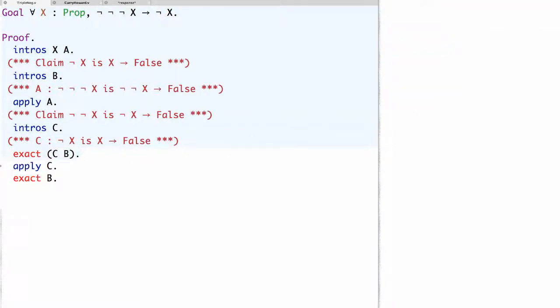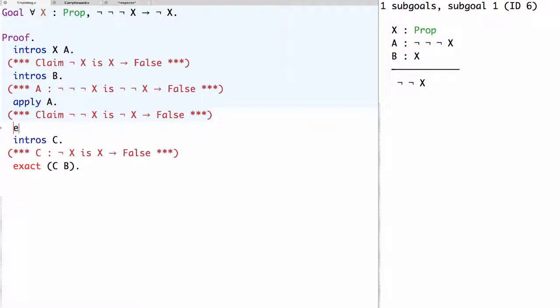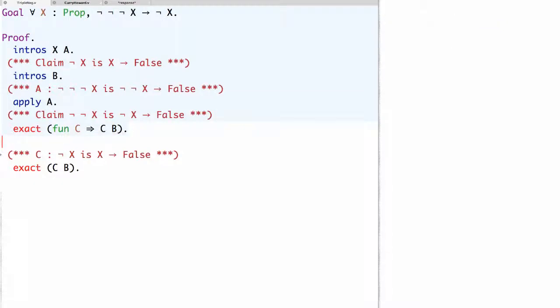Now we also know that each of these intros corresponds to a lambda abstraction in the proof term. So we can go before this intro c. So before we introduced the assumption c of not x. And we could finish the proof with an exact, by giving the proof term lambda c, c b. Recall in Coq, we write fun for a lambda.